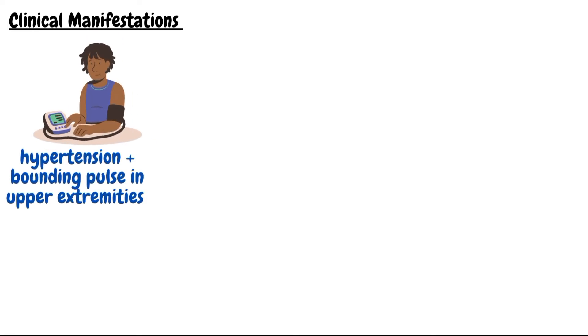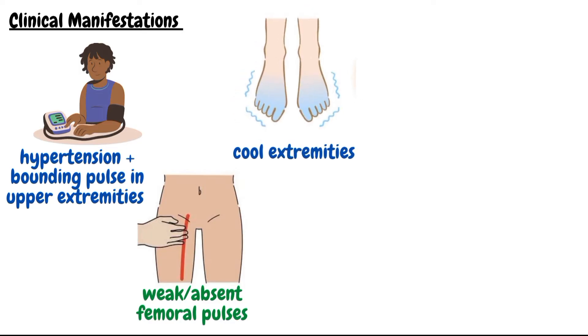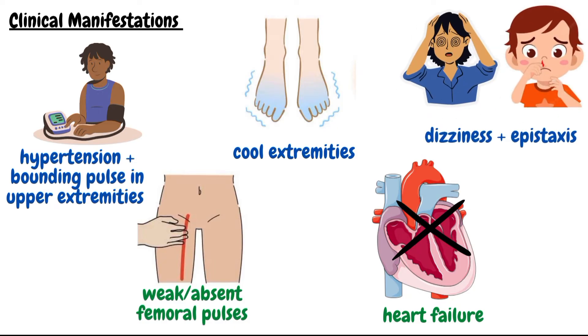Talking about the clinical manifestations, the patient may have high blood pressure and bounding pulses in the arms, weak or absent femoral pulses due to lower blood pressure, and cool lower extremities with lower blood pressure. The patient may have signs of heart failure. Older children may experience dizziness, fainting, and epistaxis from hypertension.